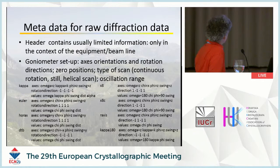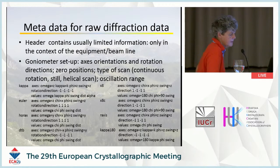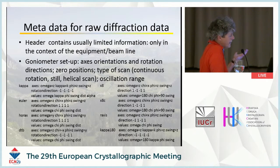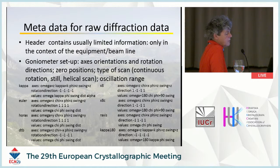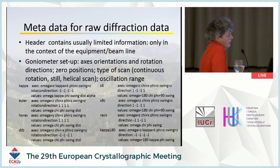So what metadata do we need to store raw diffraction data? I find that headers usually contain very limited information, and when they do it's in the context of the specific beamline equipment. For the goniometer, we should know the axis orientations in lab space, rotation directions, zero positions — which matter when you have multiple goniometer axes — and what type of scan it was: continuous, still images, helical, etc., and the oscillation range.